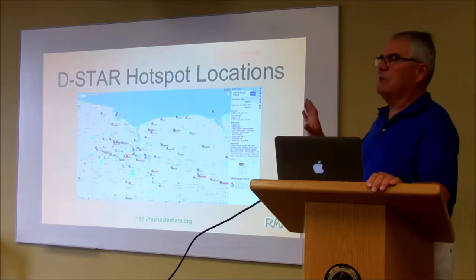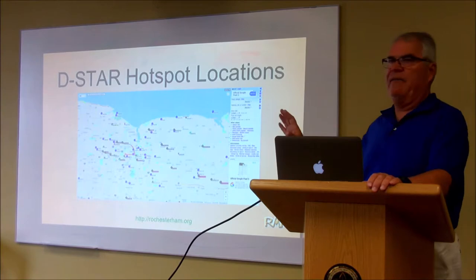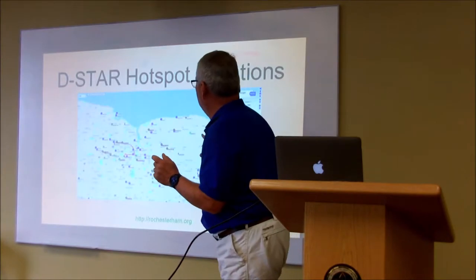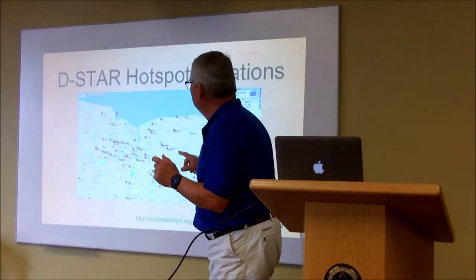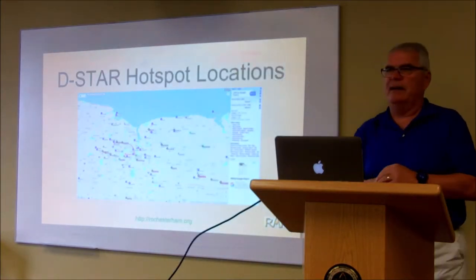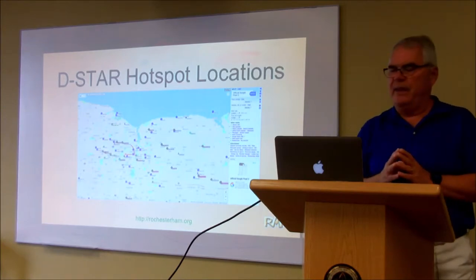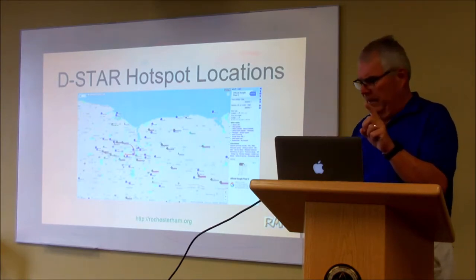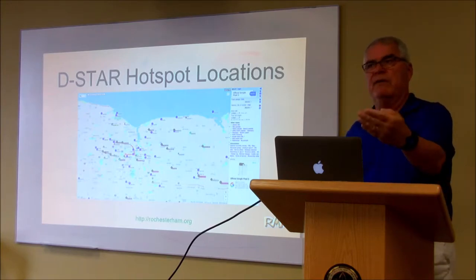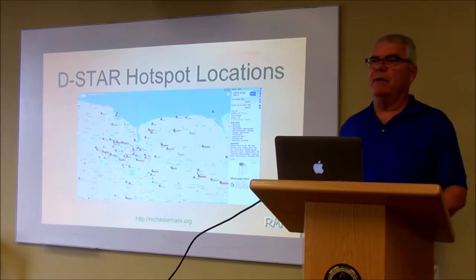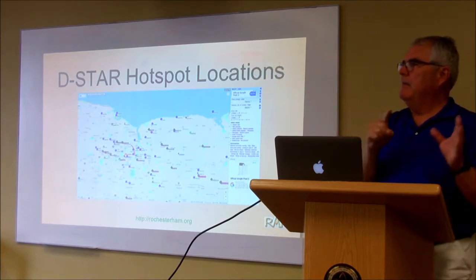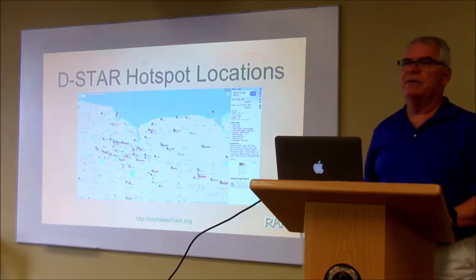The best way to find D-Star hotspots is to start with the APRS.fi screen. All of these black dots are probably hotspots — mine is listed on there, RIT is listed on there. You can move your mouse over and click on what that service is at APRS.fi, and it will give you the frequency, call sign, and so forth. There's one on a dorm at RIT, my house, and several others around town.